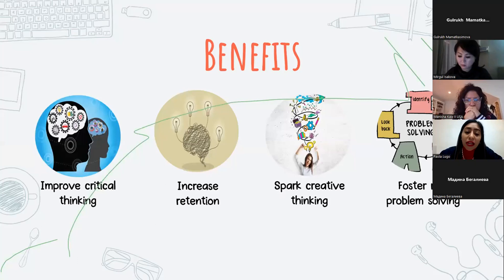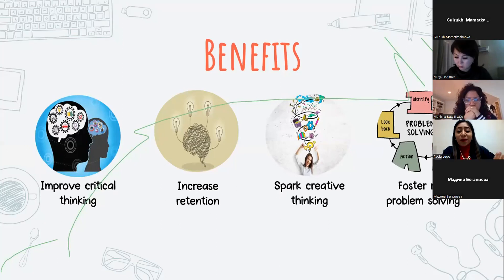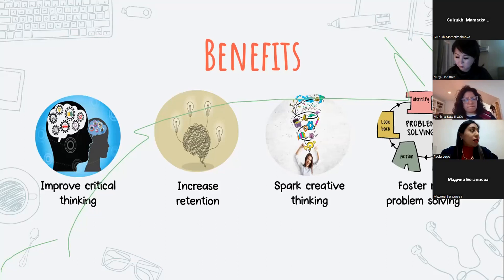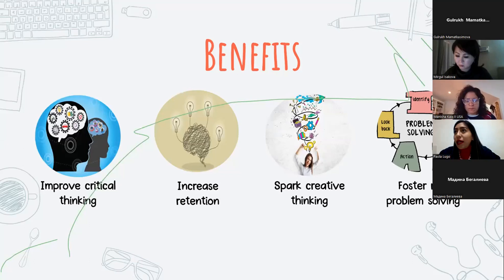Then we have spark creative thinking. Active learning helps students to understand that creativity goes beyond common learning — it develops with effort and hard work with lots of practice. Students also see how both individual reflection and collaborative work can lead to better ideas and new solutions to problems. And finally, we have foster real problem solving. The ability to solve complex problems has been called the most important skill needed for future jobs. So students in active learning classrooms understand that no one has all the answers — it's up to them to find them.